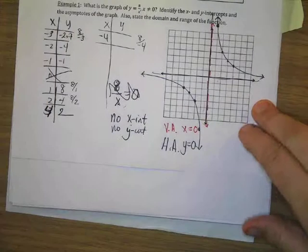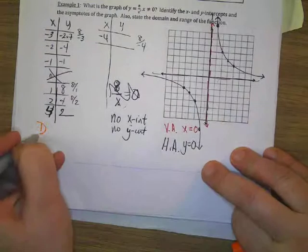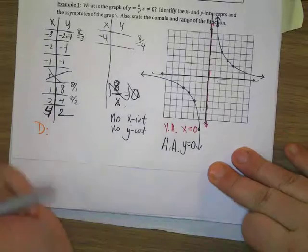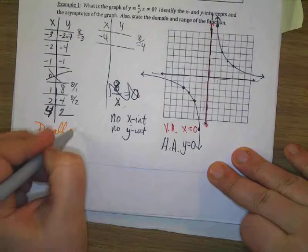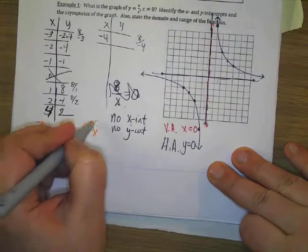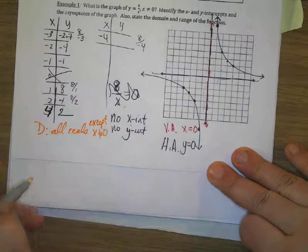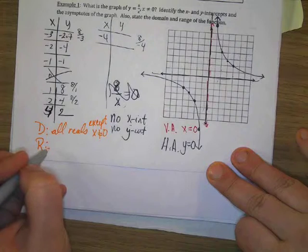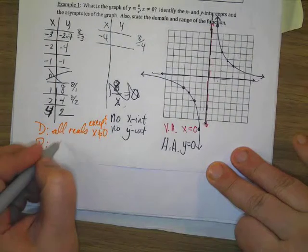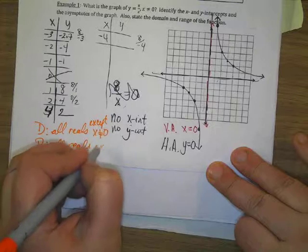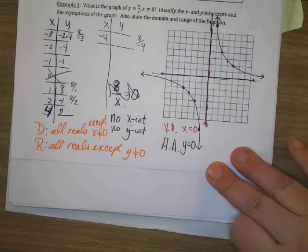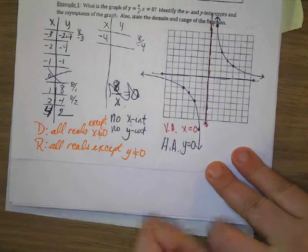Forgot the domain and range. The domain is x's. What are we allowed for x's? I can pick negative x's and that's okay. All reals except x not equals zero. What about y values, what about our range? All reals except y not allowed to be zero.